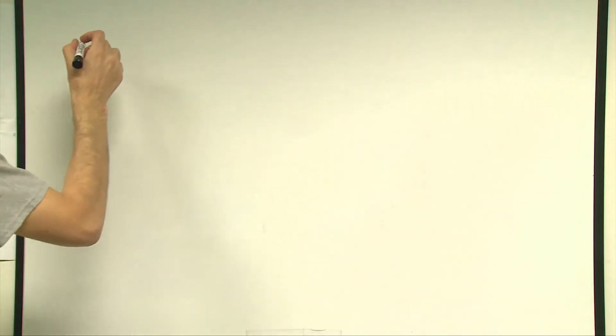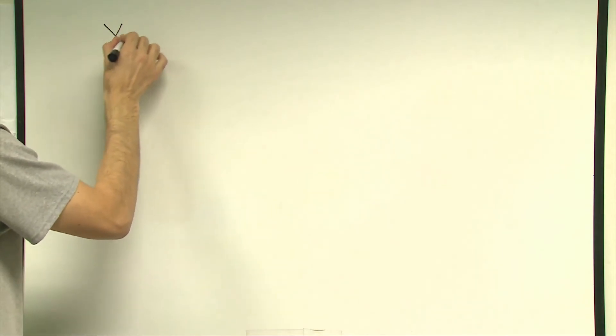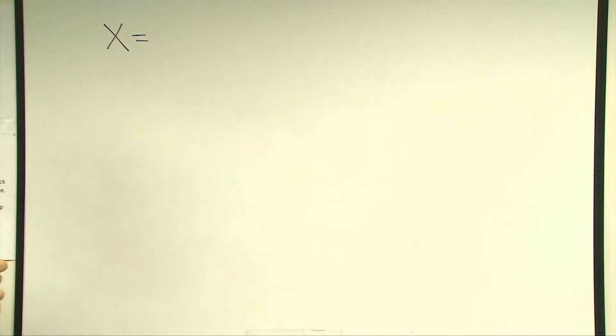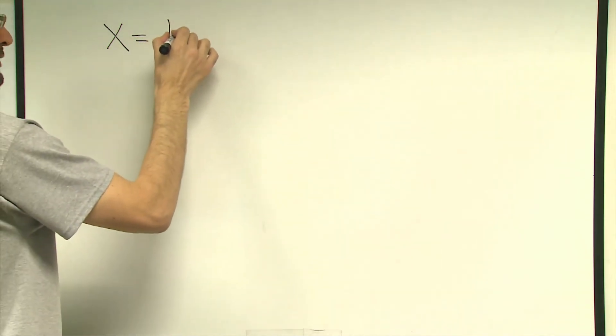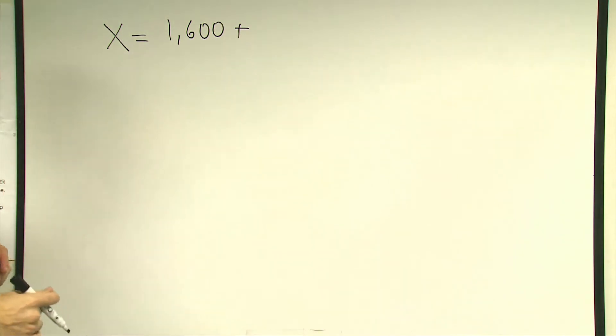Here is the answer to the question. Now let's call the total distance traveled by the ball until it comes to rest x. Since the ball is dropped from 1600 feet, the first number will be 1600 feet plus, remember the ball always reaches up to half of the distance it was just dropped from.